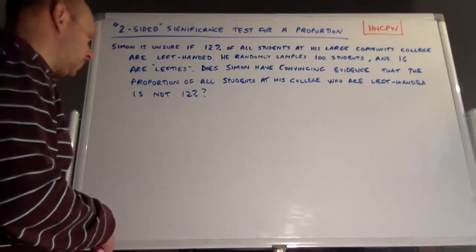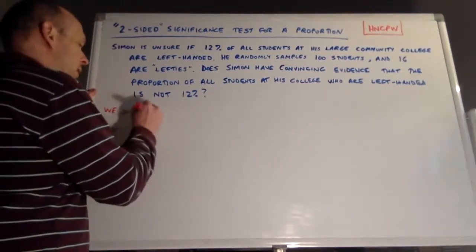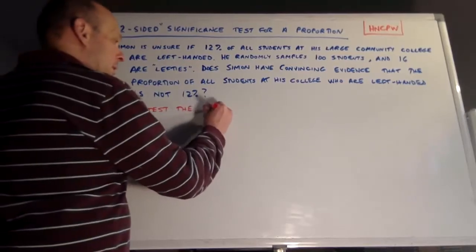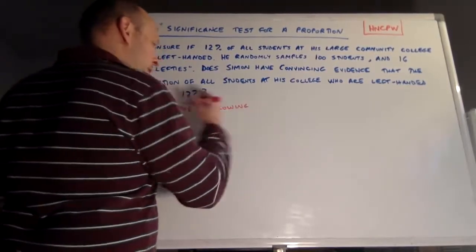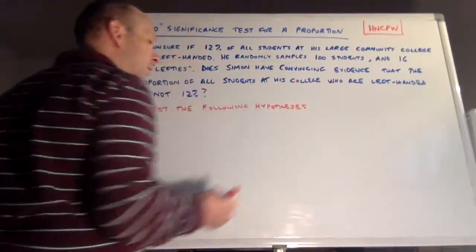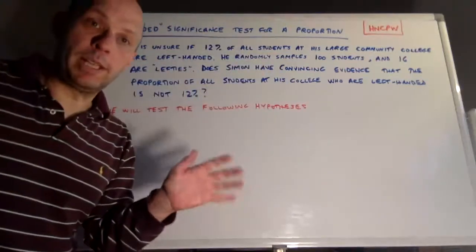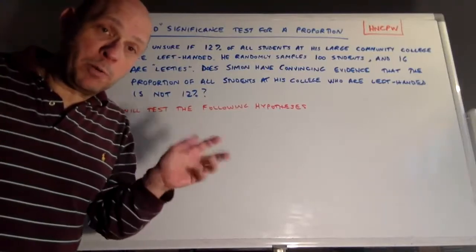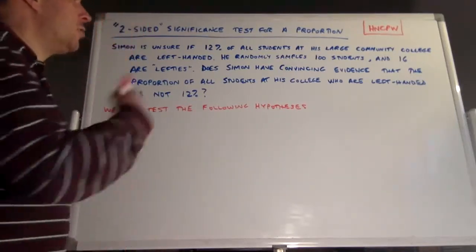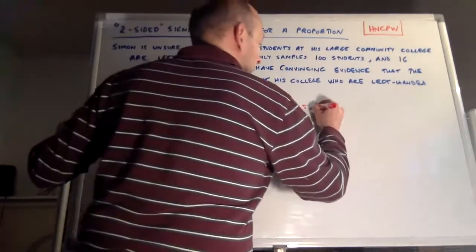We begin with the hypotheses. We will test the following hypotheses. Here's where you want to insert the significance level. The question doesn't give you one, but it could have — it could have said 'at the 1% level' giving alpha = 0.01, or 'at the 10% level' giving alpha = 0.1. If there's no alpha given, we go with the typical alpha of 0.05. So we will test the following hypotheses at alpha equals 0.05.